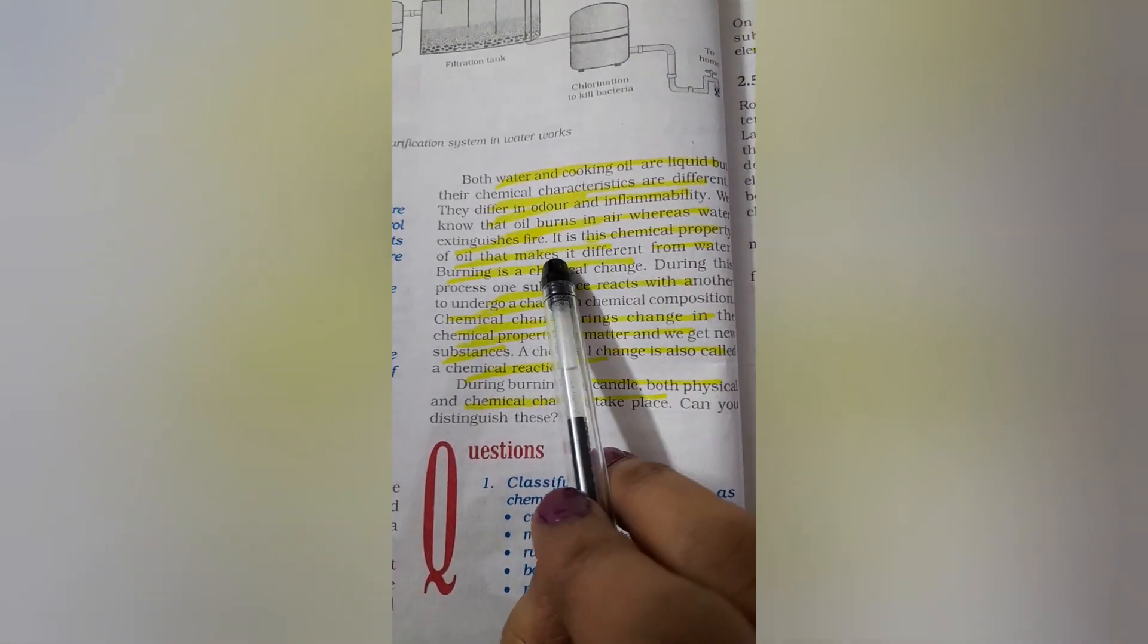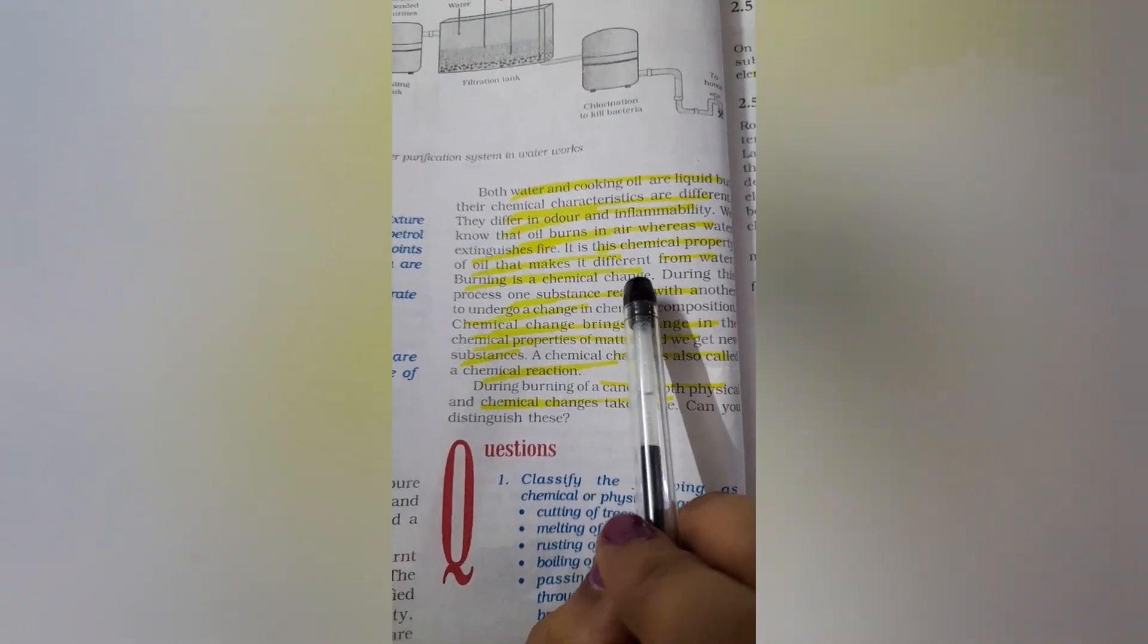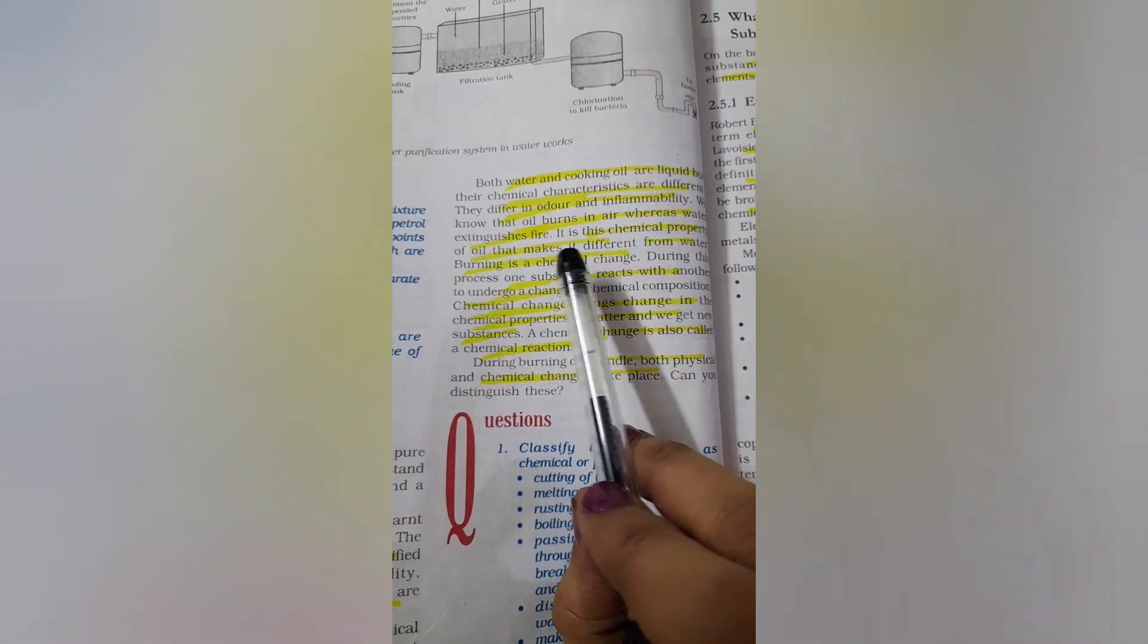The oil will burn in air but water will turn off or extinguish fire. What about the chemical property of oil that makes it different from water?